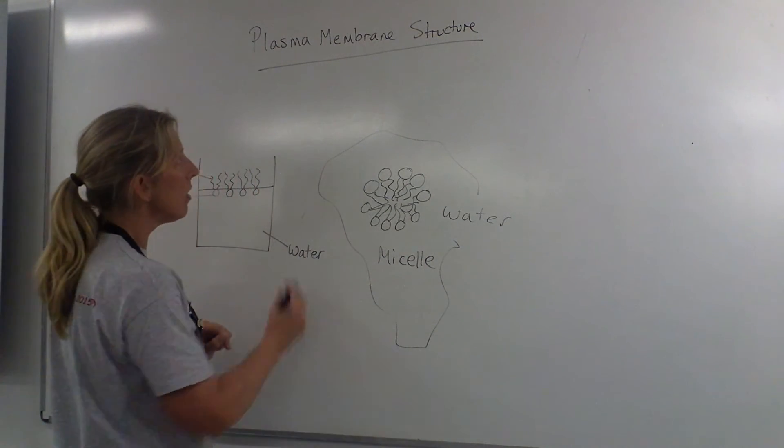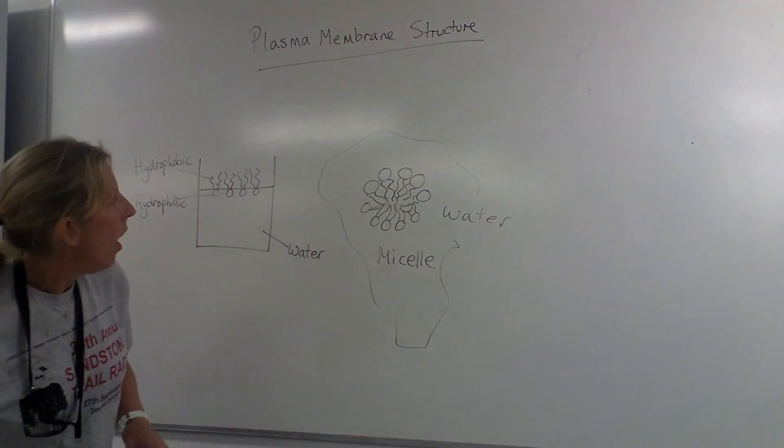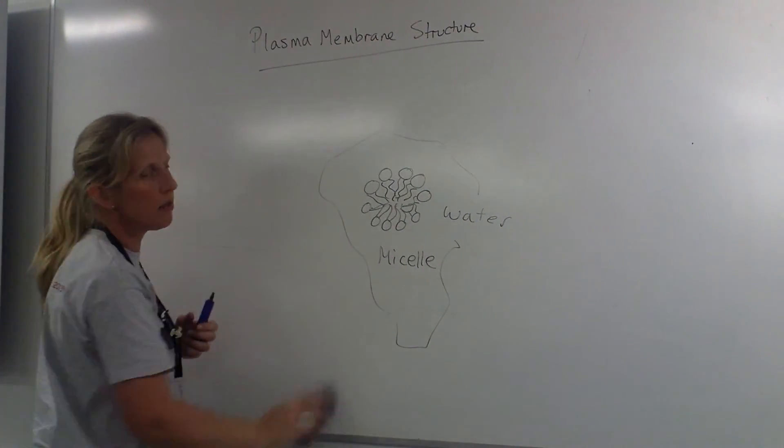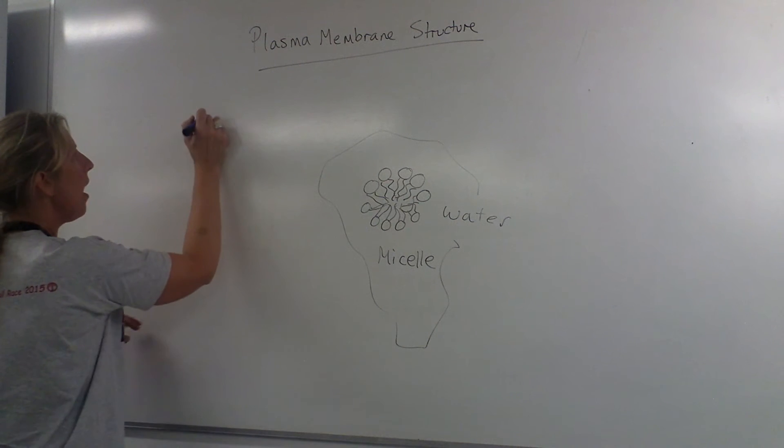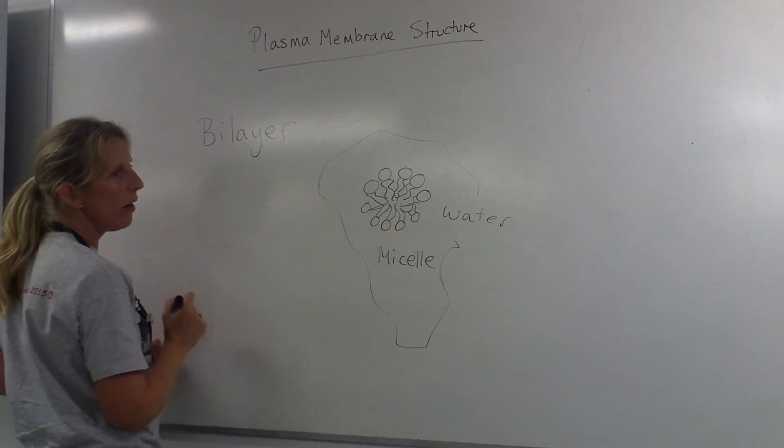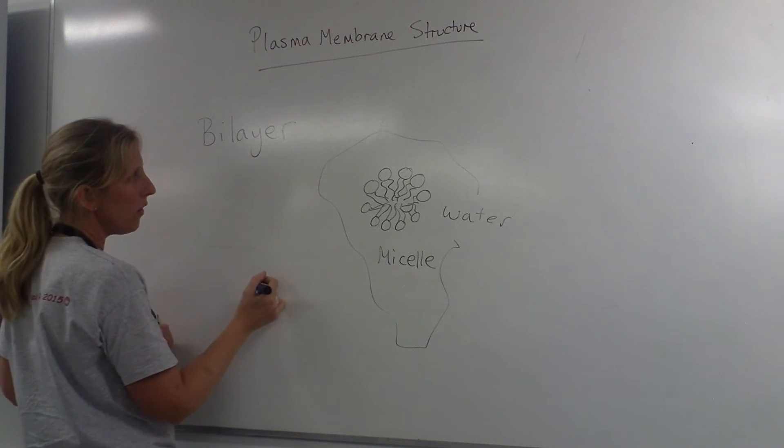In biological membranes, so the plasma membrane structure and the membrane around the cell and around the organelles, it forms a bi-layer of phospholipids. There are two layers of phospholipids.